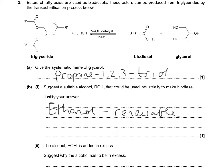We're now asked to suggest why the alcohol needs to be in excess. It all centres around the fact that this process is reversible, so it's testing your knowledge of Le Chatelier's principle. If the alcohol is in excess, it drives the equilibrium over to the right-hand side, essentially ensuring that the reaction goes to completion.